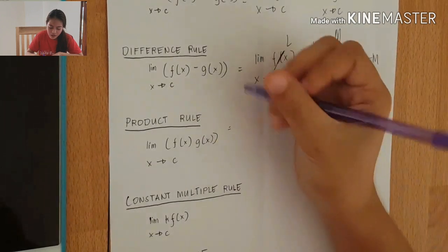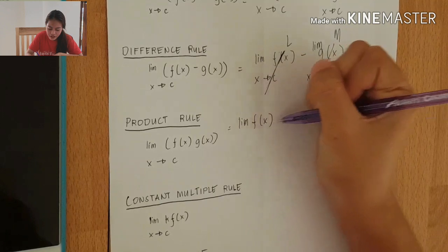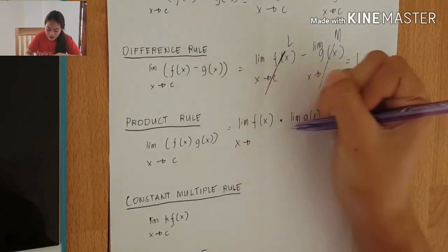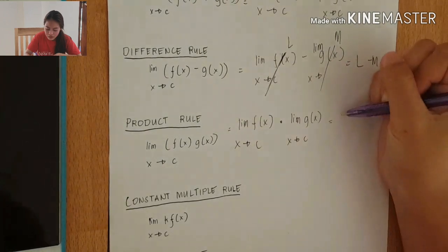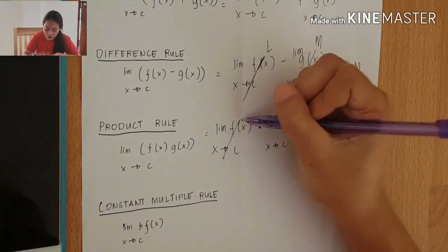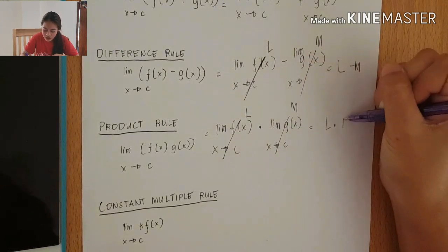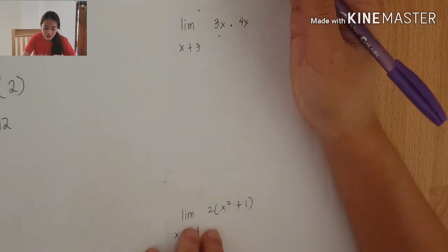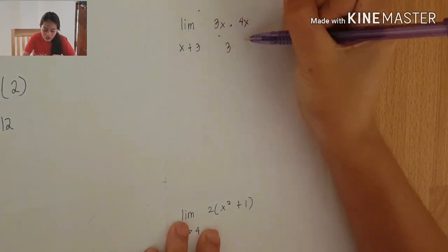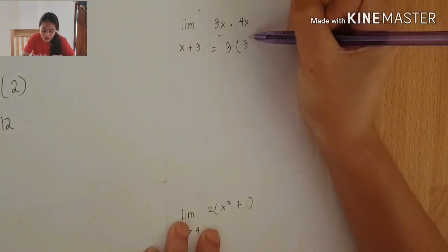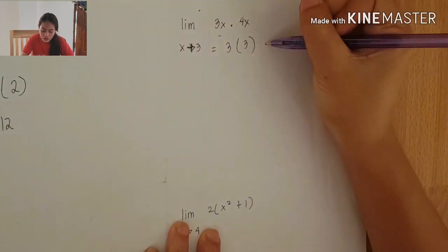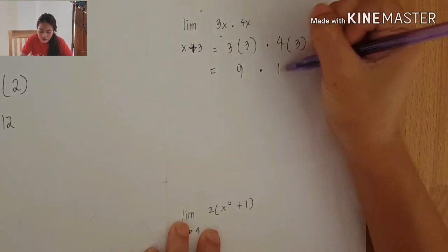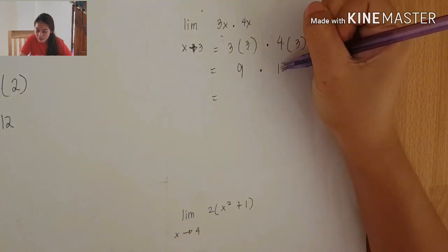The next rule is the product rule: limit f(x) times limit g(x) as x approaches c equals L times N. For example, 3 times 3 equals 9, and 4 times 3 equals 12, so 9 times 12 equals 108.